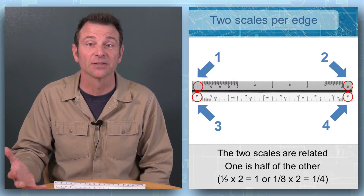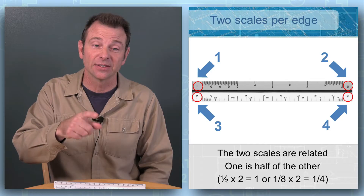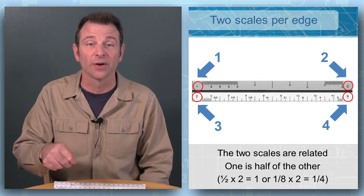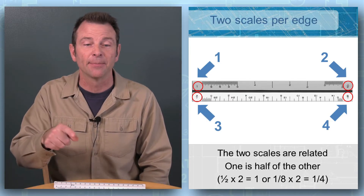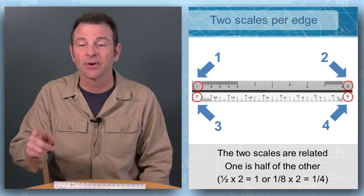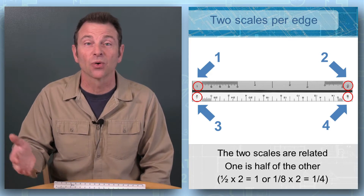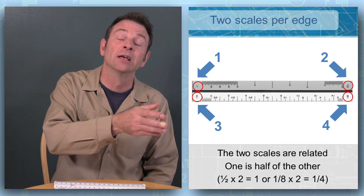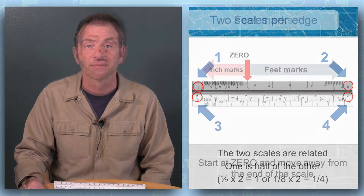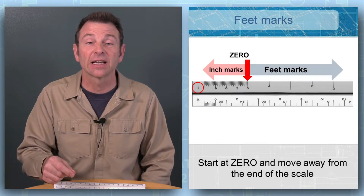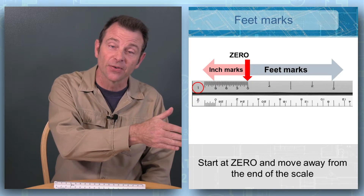An architect scale has multiple scales built into it. Every edge shares two different scales. On one end you have one inch equals one foot scale; on the other end of that edge, half inch equals one foot. On the bottom we have quarter inch equals one foot, and number four calls out eighth inch equals one foot. Even though we share one edge with two scales, we measure from one direction for one scale and from the other direction for the other scale — it's important not to get these confused.